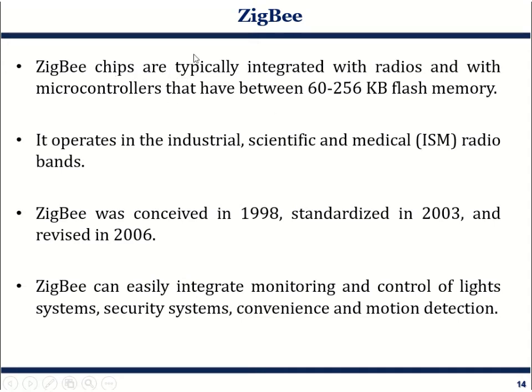Zigbee operates on a specific single frequency of 2.4 GHz. In terms of hardware features, Zigbee typically integrates a radio and microcontroller with flash memory of 60 to 256 KB. Development started in 1998, it was standardized in 2003, and revised in 2006.